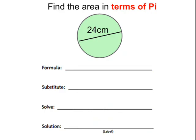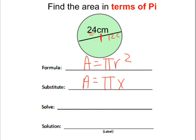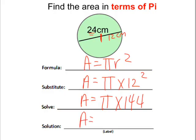Let's do one more. Start with our formula: pi r squared. We're not going to substitute for pi — we just leave it. Now the radius here is not 24; again, that's our diameter. So the radius is half of 24, which is 12 centimeters. 12 squared is 144, and we don't touch the pi. So the area of this circle in terms of pi would be 144 pi centimeters squared. That's how you find the area of a circle using pi r squared and in terms of pi.